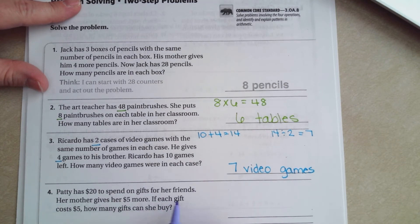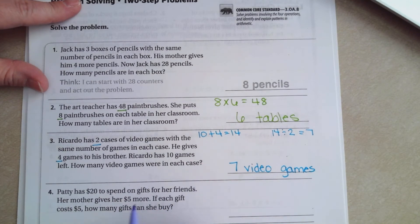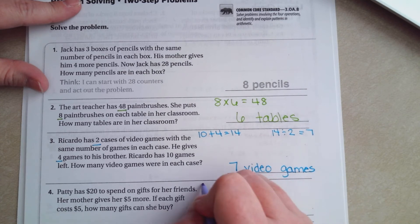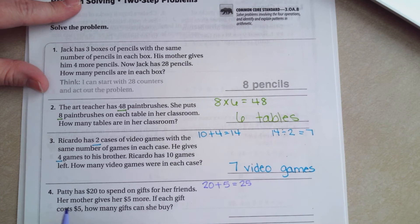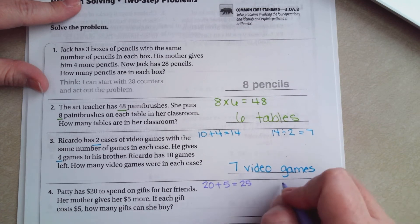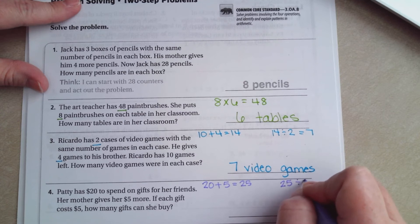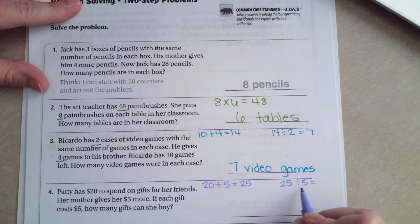Patty has $20 to spend on gifts for her friends. Her mother gives her five more, so 20 plus 5, she has $25. If each gift costs $5, how many can she buy? So 25 divided by 5 is, well, 5 times 5 is 25, so five gifts.